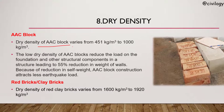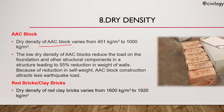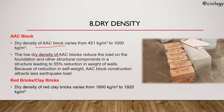Dry density: the dry density of AAC blocks varies from 451 kg/m³ to 1000 kg/m³. This property of low dry density reduces the load on the foundation and other structural components, leading to a 55% reduction in the weight of walls.